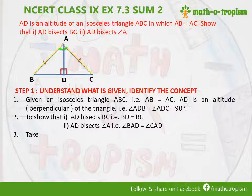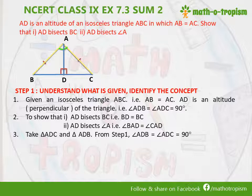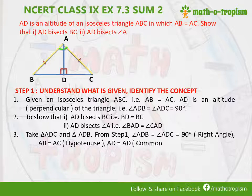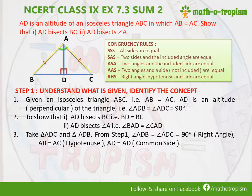We will take triangles ADB and ADC. From step 1, we have that angle ADB is equal to angle ADC, which is 90 degrees. AB is equal to AC, and we have AD as the common side. When we think about all the congruency rules, we can see that if there is a right angle, a hypotenuse, and a side being equal, then we can use the congruency rule of RHS.